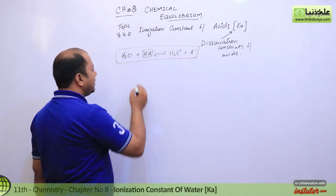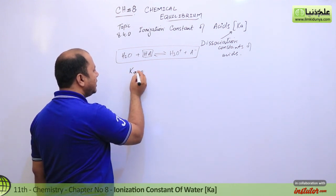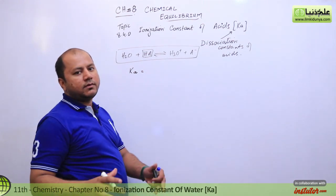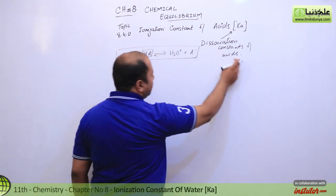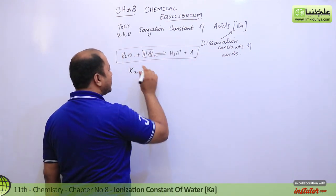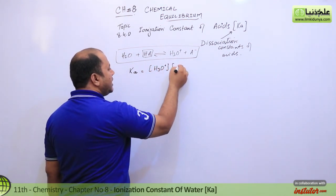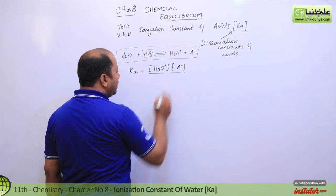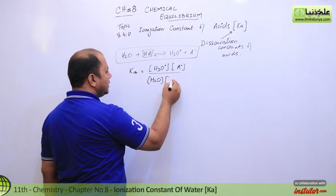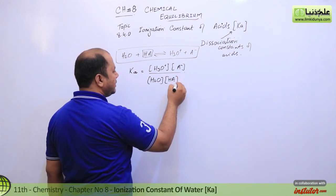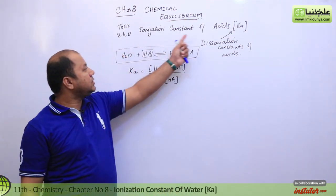Now, what can you think about this? For example, the KC value. We are talking about acids — we are very specific with respect to acid. For that acid, we will write Ka. The dissociation constant of acids is products over reactants. What is our product? H3O positive and A negative. And we have water and the acid as reactants. So that's the formula for the ionization constant of acids.